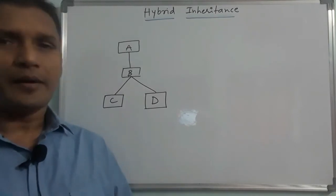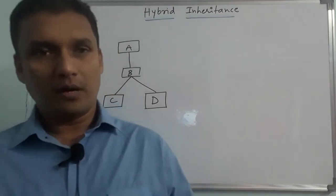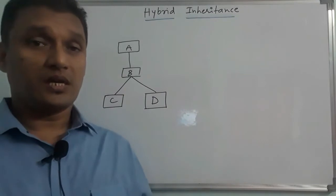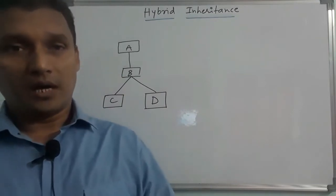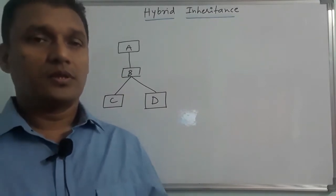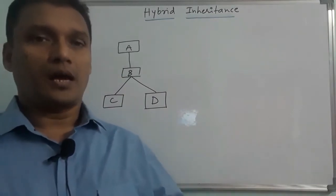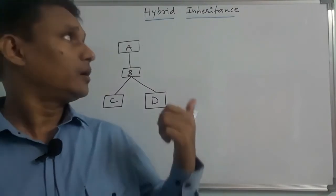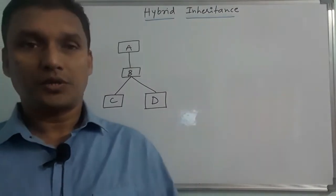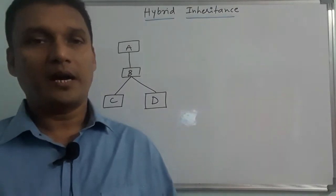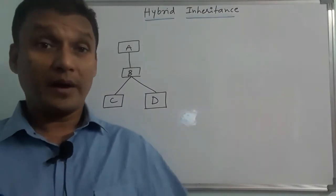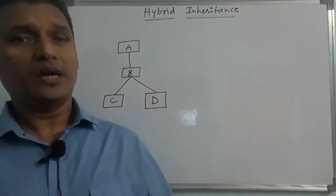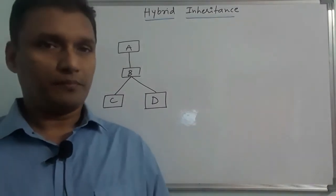Any type — hierarchical, multi-level, multiple, single — can be combined. Hybrid inheritance means combining more than one type of inheritance into a single form.